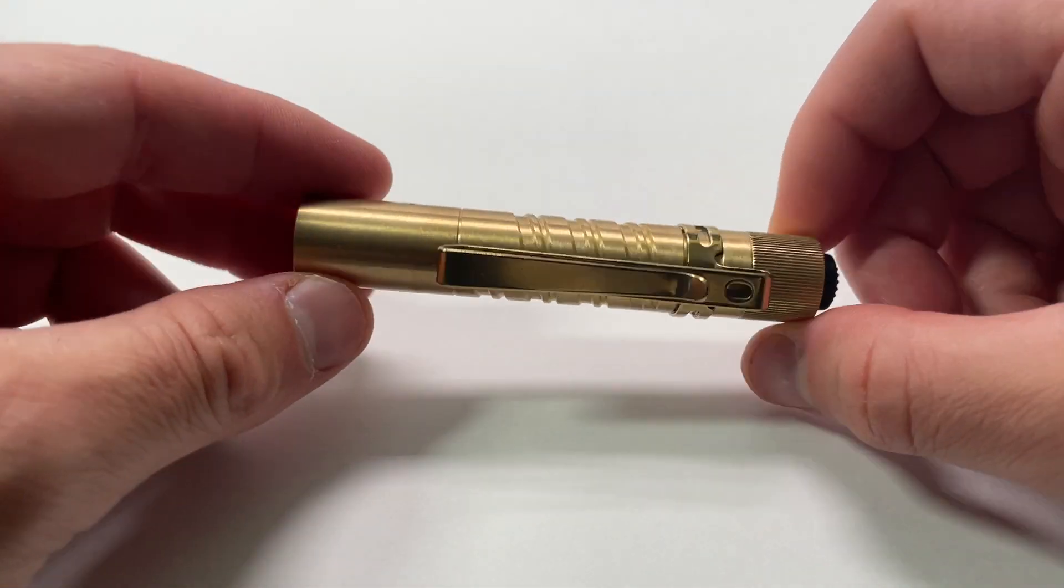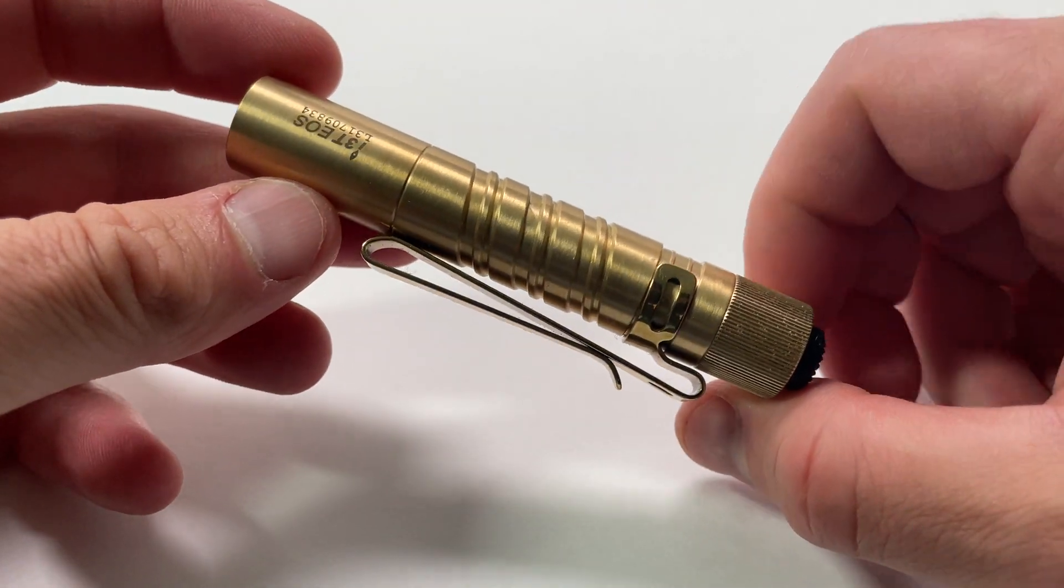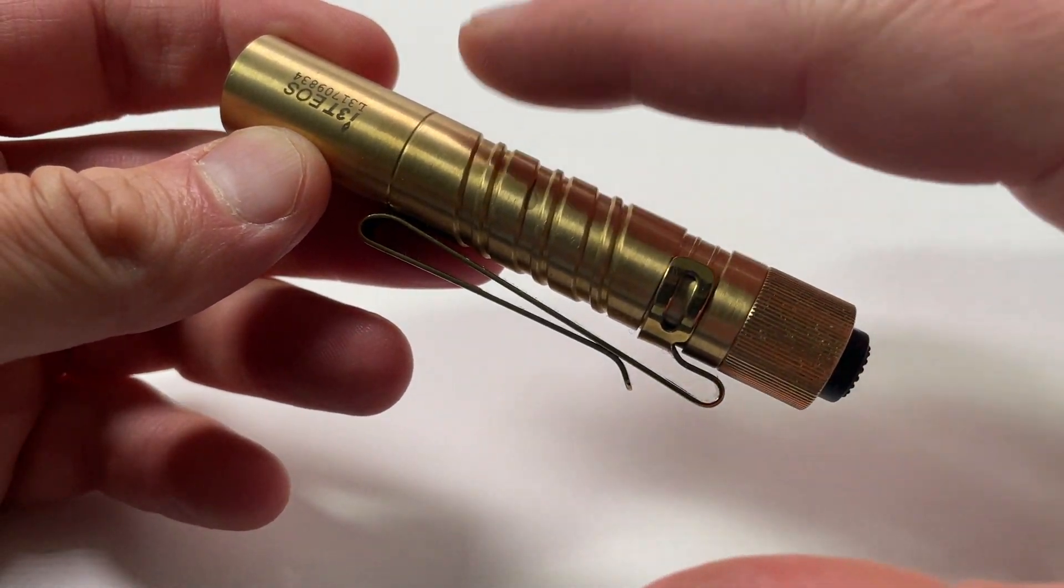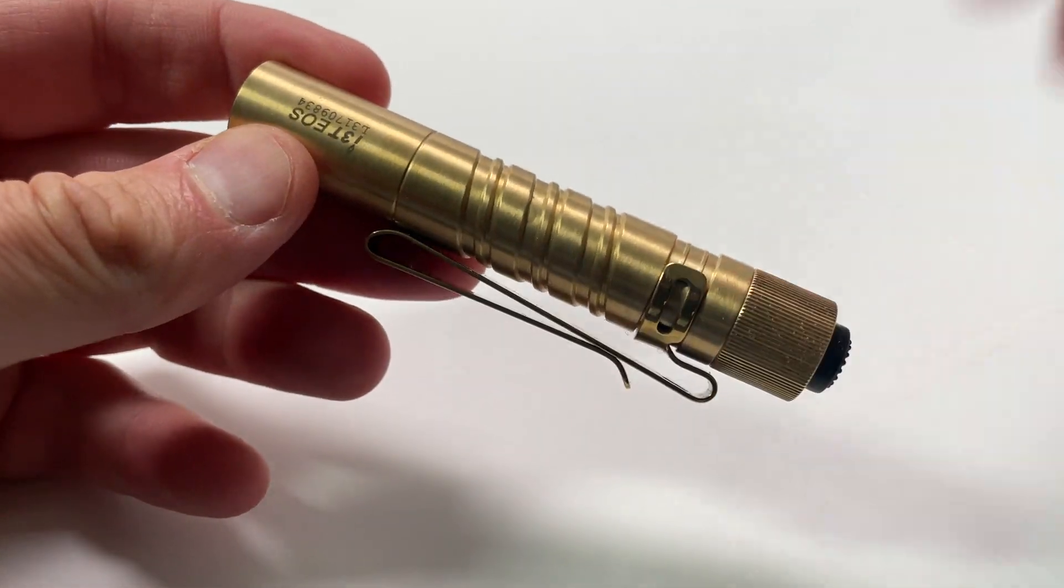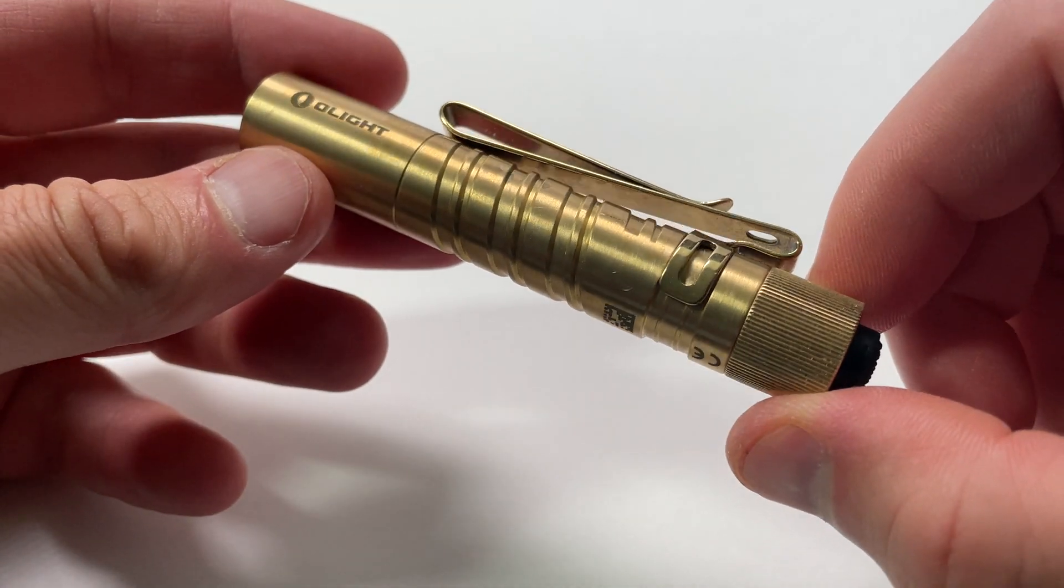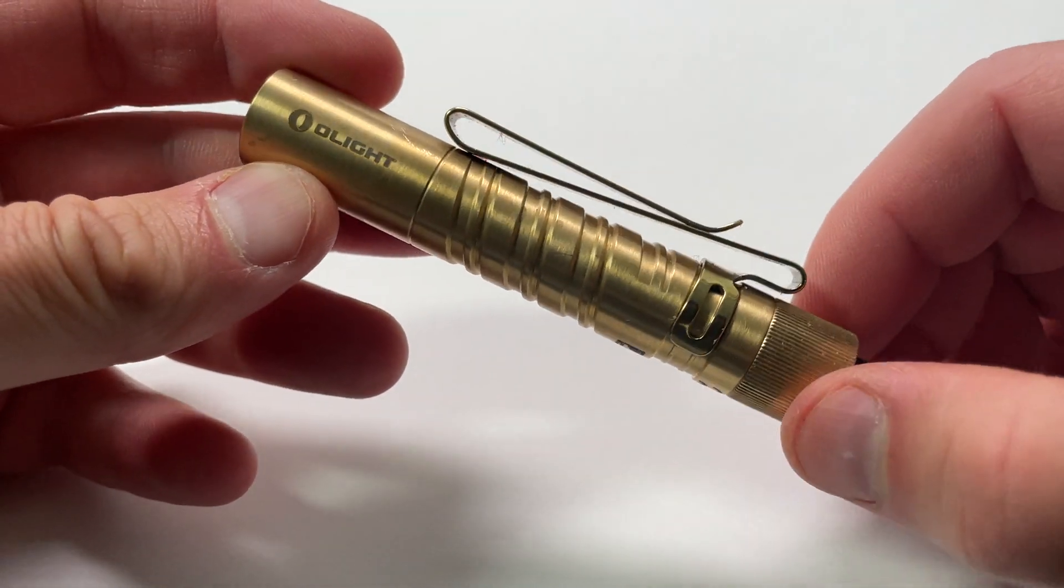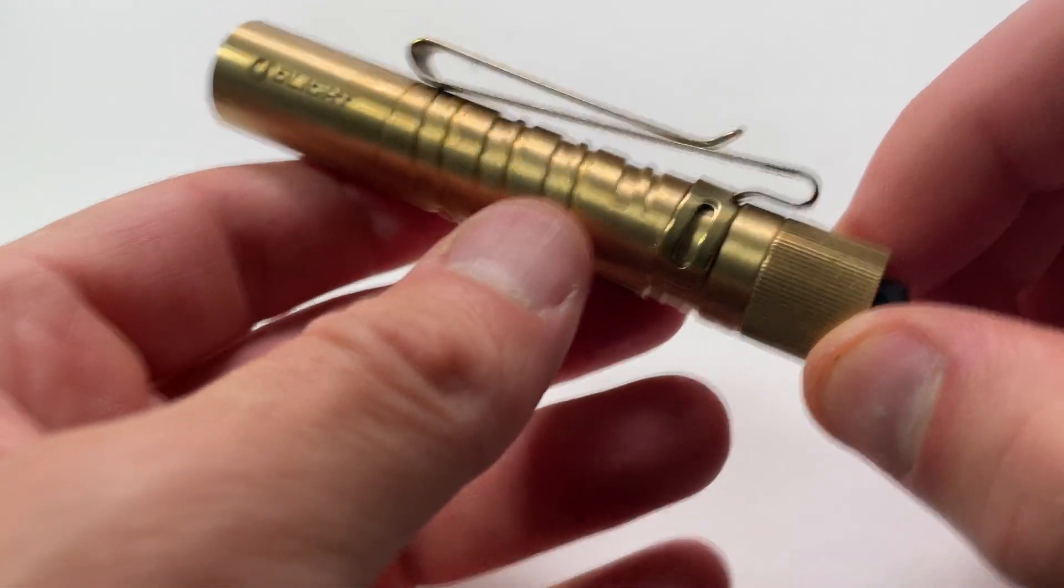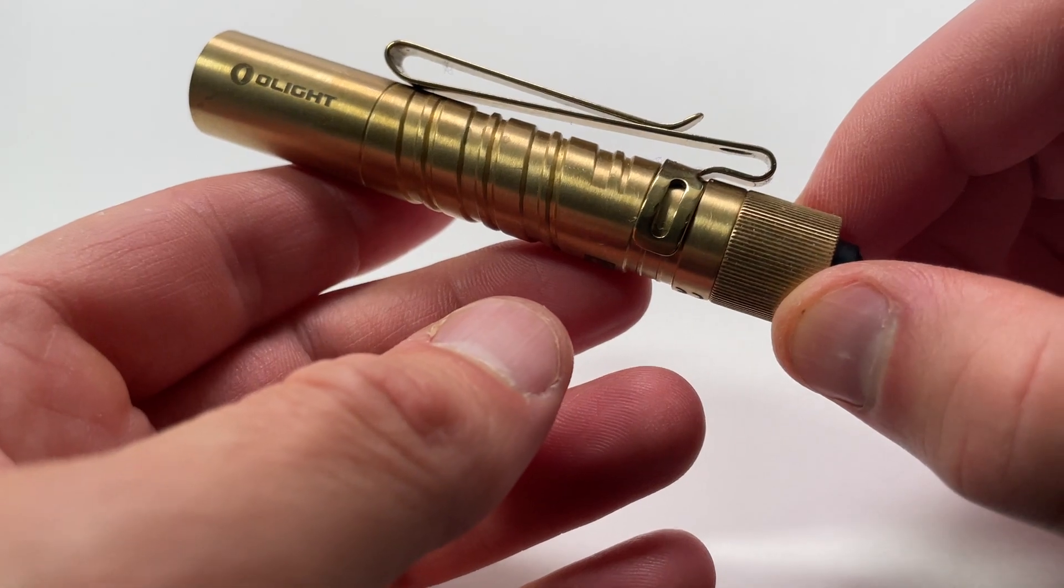It's more popularly sold with an aluminum body that's all matte black. The aluminum model with the black body sells for about $20. This brass body, it's uncoated brass, so it will build up a patina over time. But this brass model is about $30, so a good deal more expensive than the standard model.